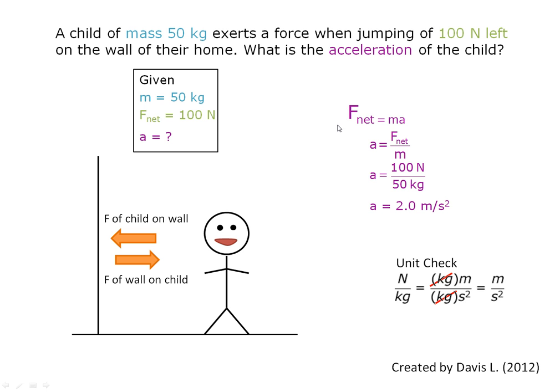So we use the formula F net equals ma and we isolate the variable a. So acceleration is equal to F net over m.